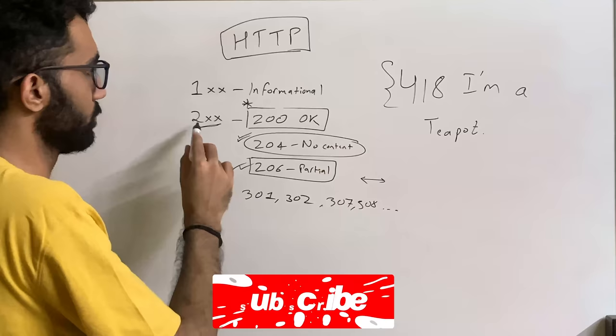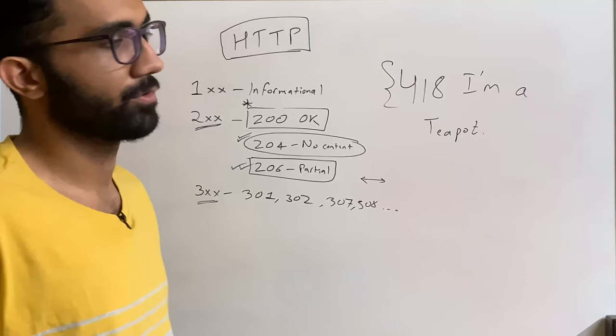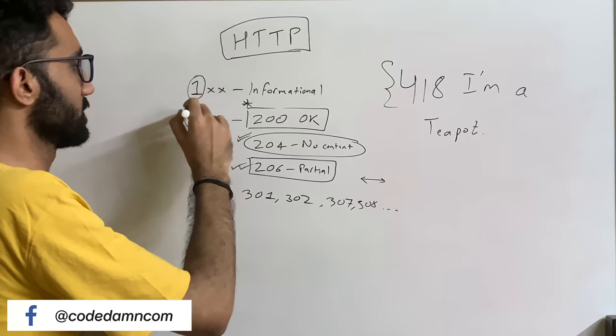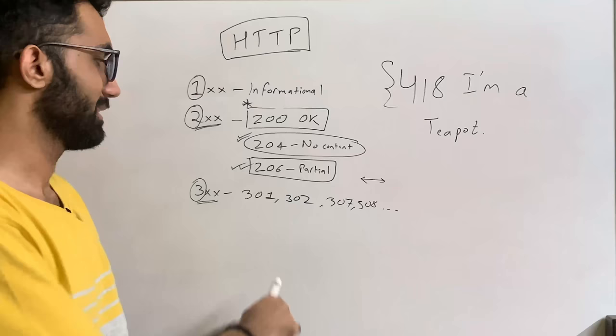It's not about making use of all the numbers. The first digit indicates the purpose. If there's any use case where you'd want a new redirection message, that will go in the 300 range, not in 200 or 100.